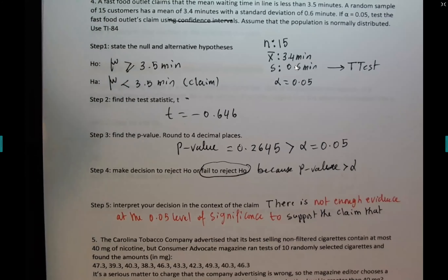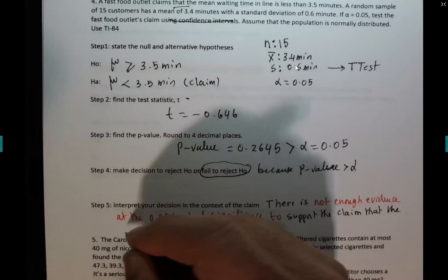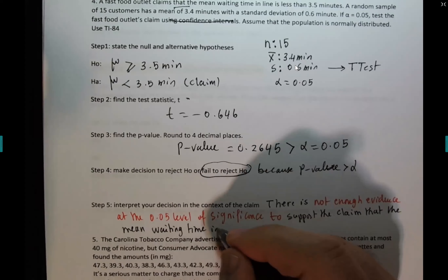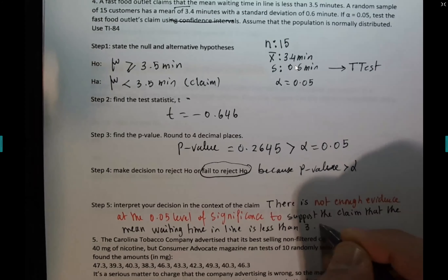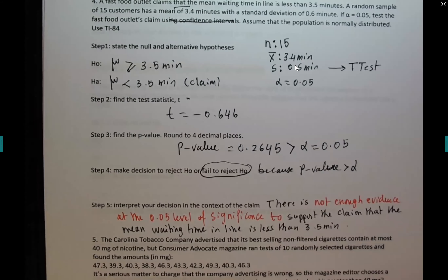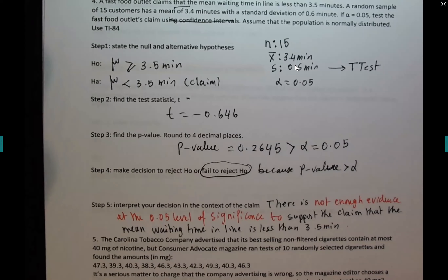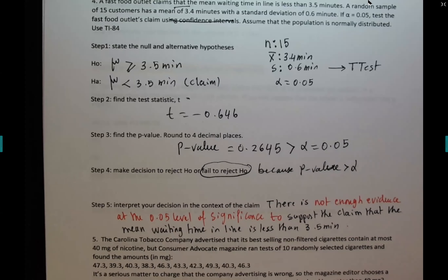We're telling the fast food outlet that their claim is probably wrong. We could not support their claim. When you don't support their claim, you go back and tell them: we think your claim is not valid, go back and revisit it. If you had supported their claim, then probably it's valid — but here there is not enough evidence to support their claim.